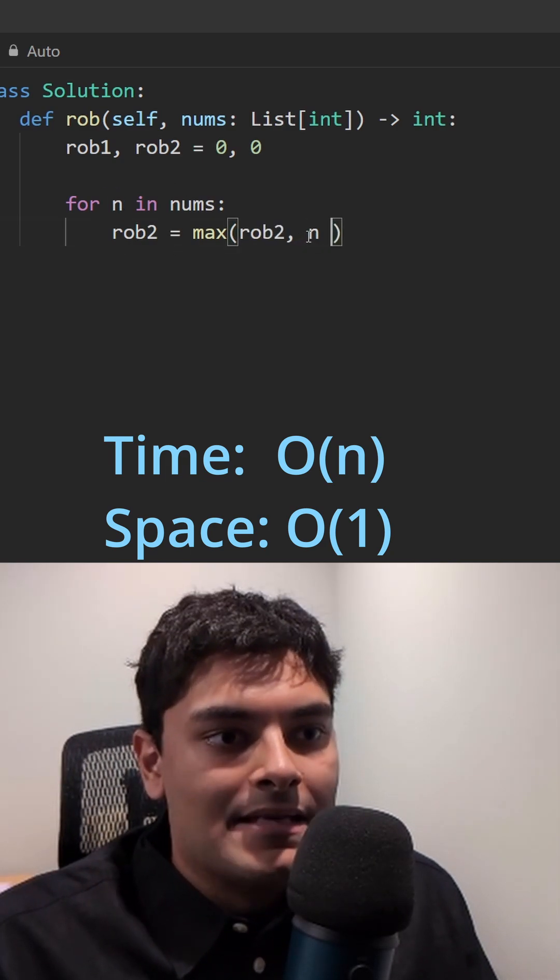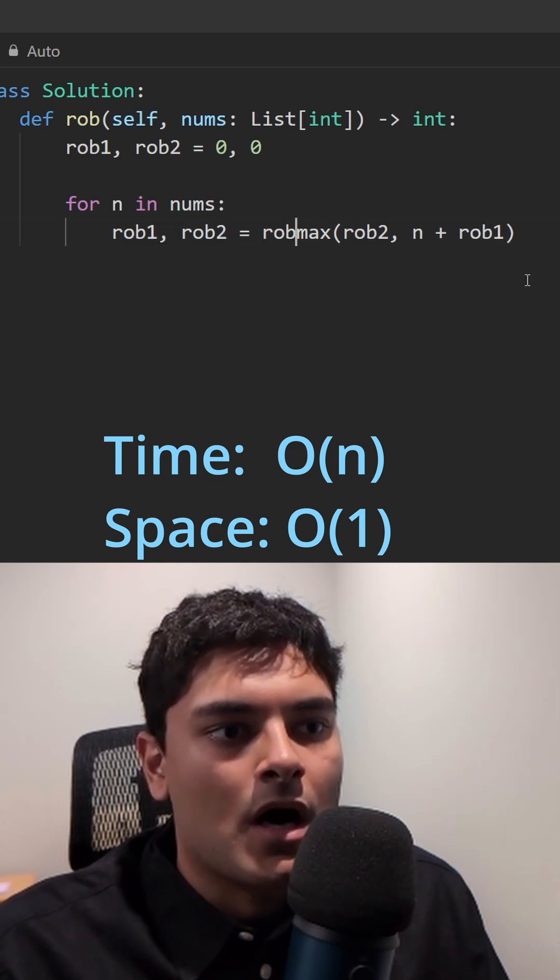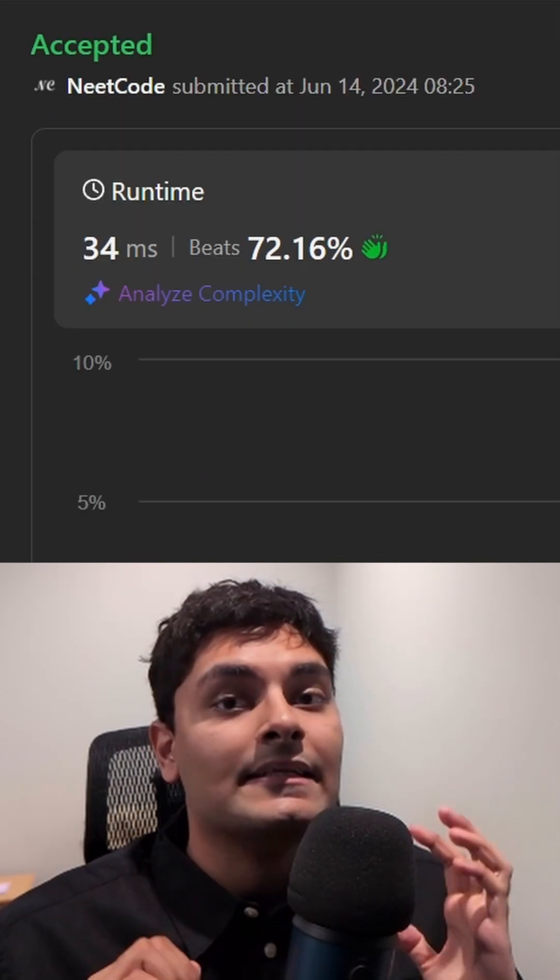It's the result of n plus rob one. We can update rob one, which is now just going to be set to rob two, and then return that. And it works.